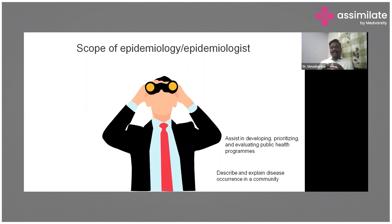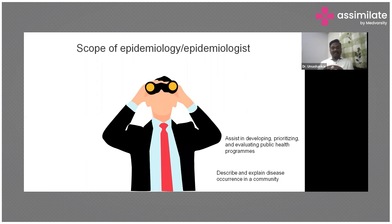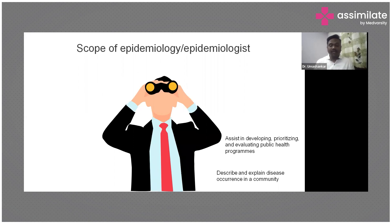Suppose we decide to run a program on preventing COVID or reducing infant mortality rate. We develop some programs, and then we need to assess whether those programs are going in the right direction. So we evaluate the programs — whether they are successful or not. If successful, what is the reason? If not successful, why not? That is how we try to prioritize and evaluate health programs.